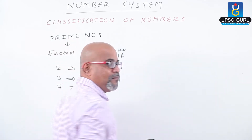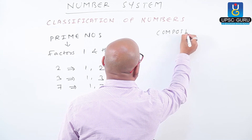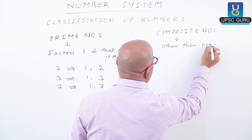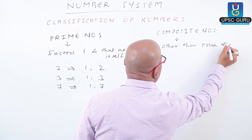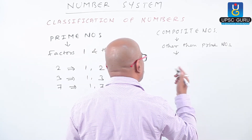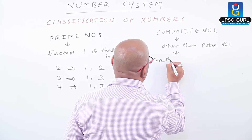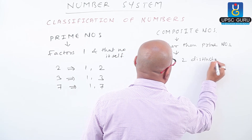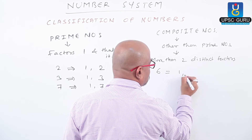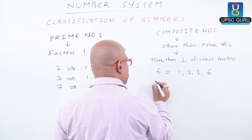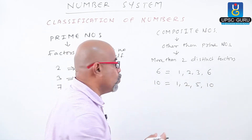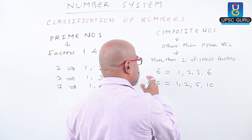The numbers other than prime numbers are called composite numbers — that is, numbers which have more than 2 distinct factors. They are called composite numbers. For example, 6: factors are 1, 2, 3, and 6 itself. If we check 10, factors are 1, 2, 5, and 10 itself. Here, there are more than 2 distinct factors. Therefore, they are called composite numbers.